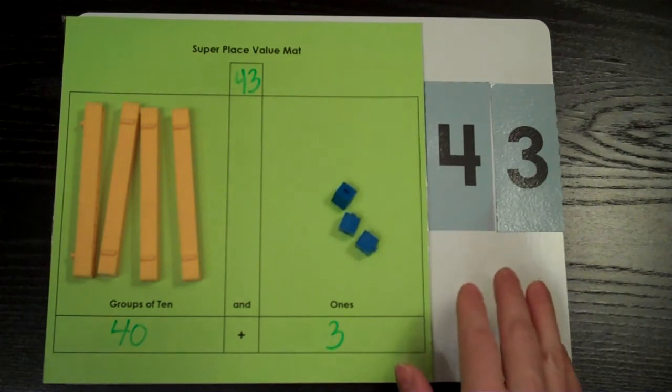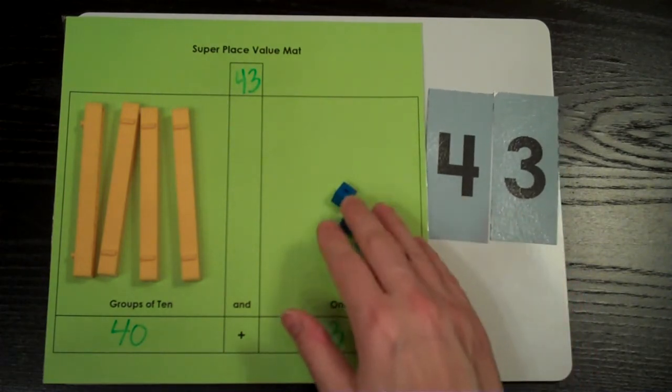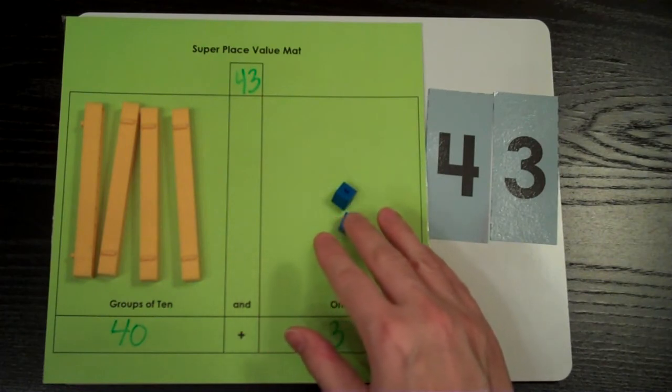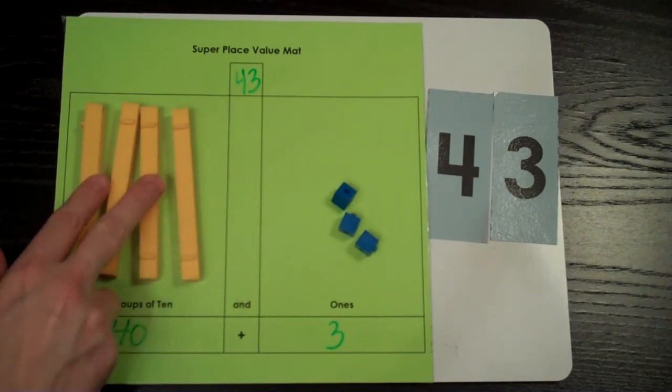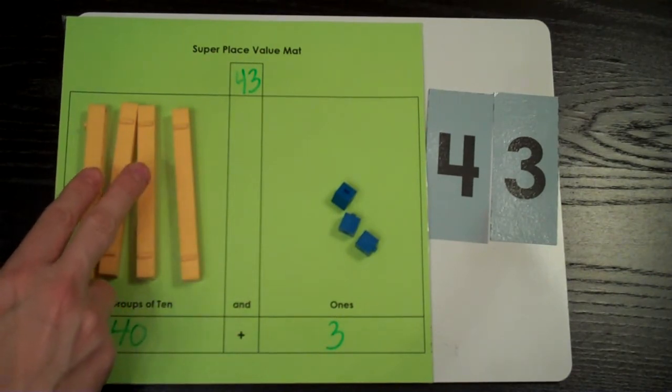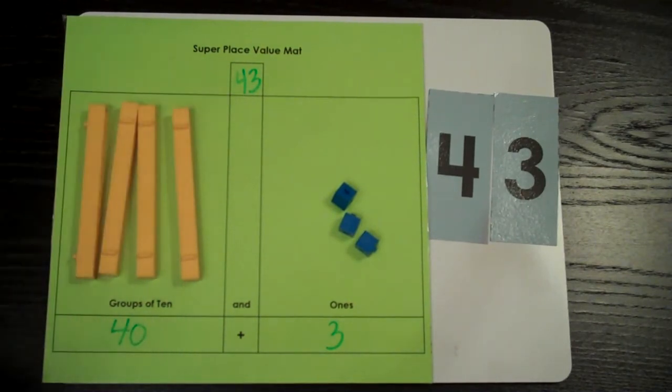I've represented the number 43 as a numeral here and as base 10 blocks on my mat. It's important to remember that the ones place and the tens place only ever have one digit when we write them as numerals.